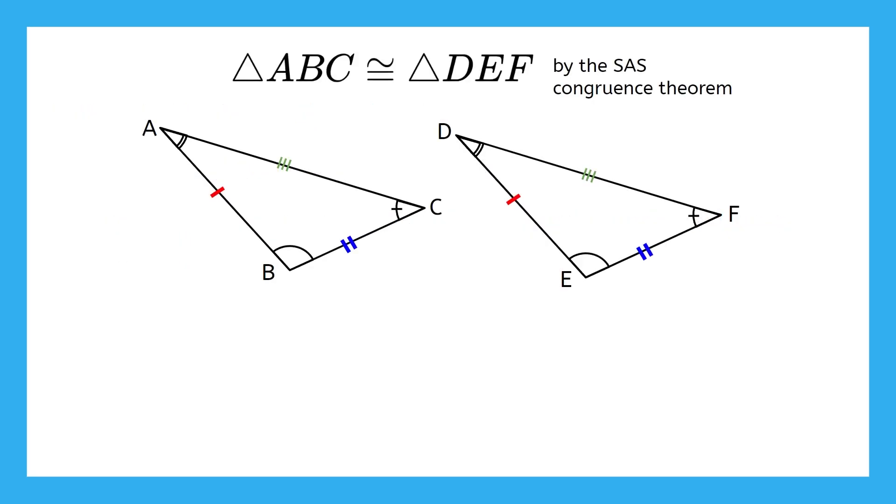Let's go back to our example from earlier. We started with three pieces of information. Segment AB is congruent to segment DE. Angle B is congruent to angle E. And segment BC is congruent to segment EF. That was all we were given. But then we used the side angle side congruence theorem to say the triangles are congruent and write a congruent statement.